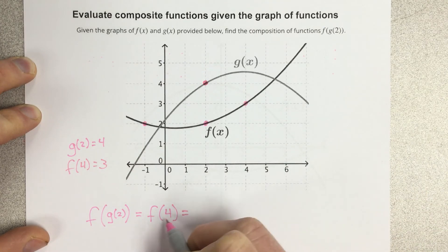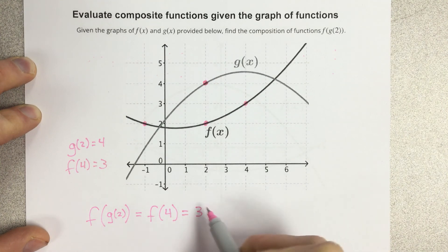So I get an output for f of 4 of 3, which tells me that f of g of 2 is actually just equal to 3 using composition of functions.